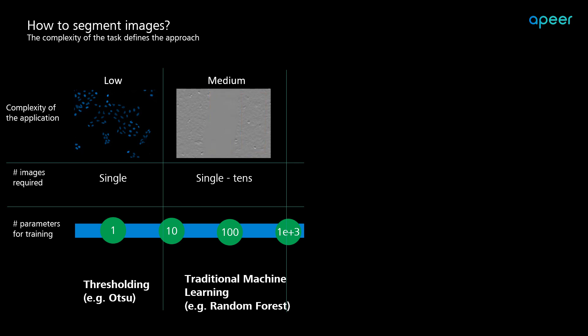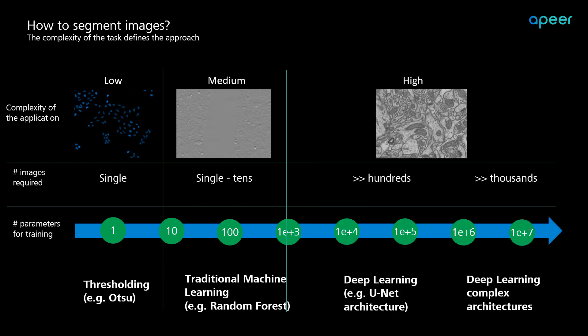Traditional machine learning techniques often yield excellent results even with limited training data, making them easily trainable on any workstation. But as the complexity of images increases, for example, in this case, detecting mitochondria against a complex background is a very challenging task, and this cannot be easily achieved using traditional machine learning approaches.